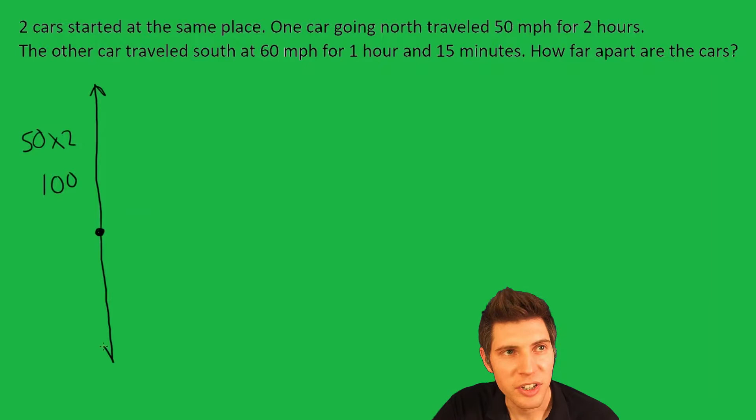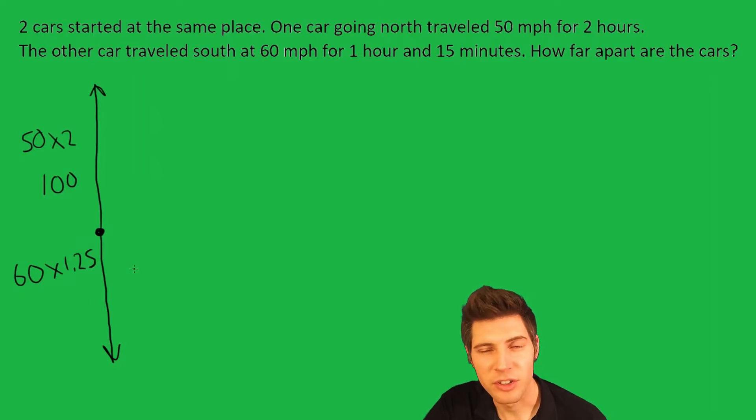Then the other car is going south for 60 miles an hour. And for one hour and 15 minutes, that's 1.25 hours. So it's not 1.15. 15 minutes is one fourth of an hour. So it's 1.25. And 60 times 1.25 is 75.